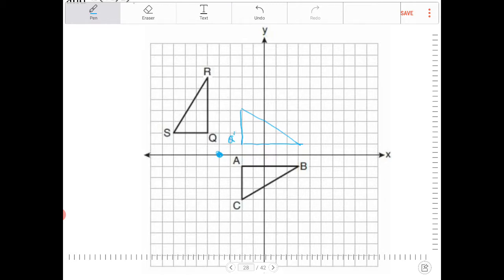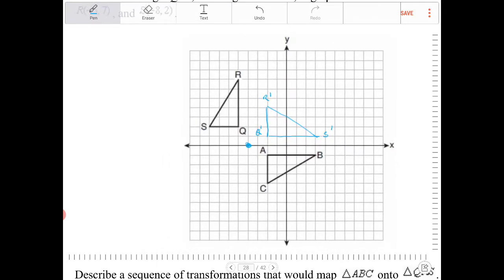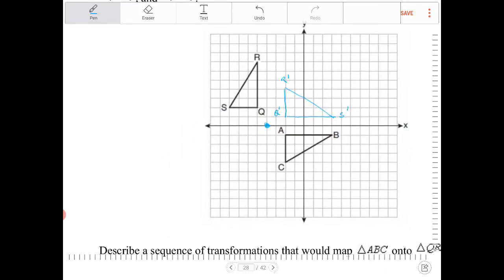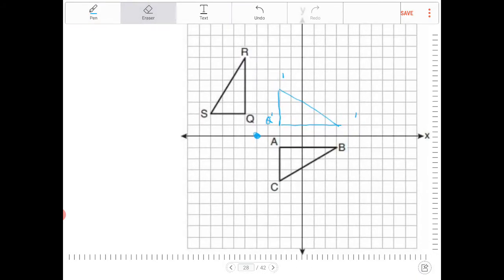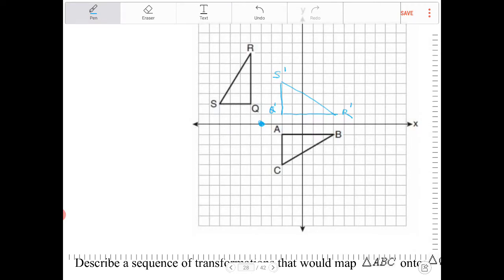So Q prime, R prime, and S prime. And after I perform the rotation over that point, I am going to perform a reflection. So QRS, actually no, I misdrew it. So this should be, it should look like this. That is S prime, and this is R prime. And then when we reflect it, then everything will map out.